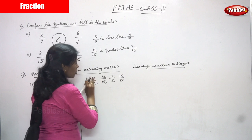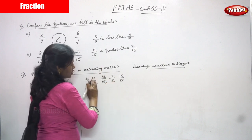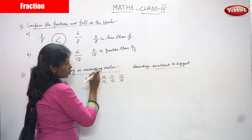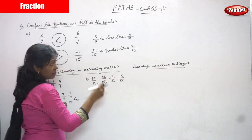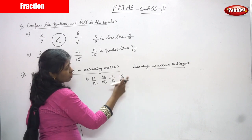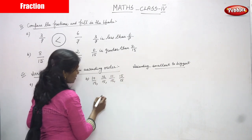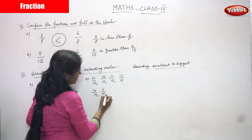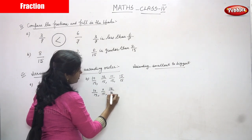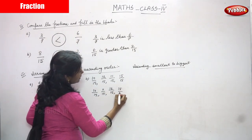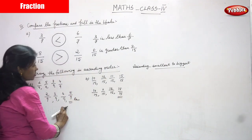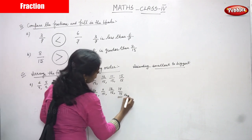The numerators are 10, 12, 11, and 15. Arrange from smallest to biggest: 10 by 15, then 11 by 15, then 12 by 15, and finally 15 by 15. This is the right answer — smallest to greatest, just like ascending order requires.